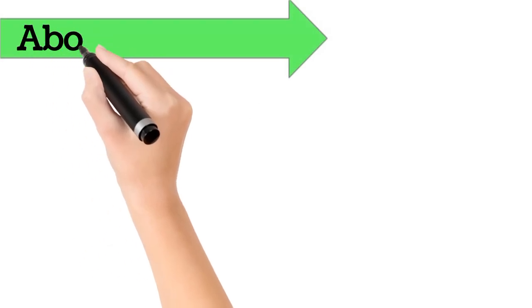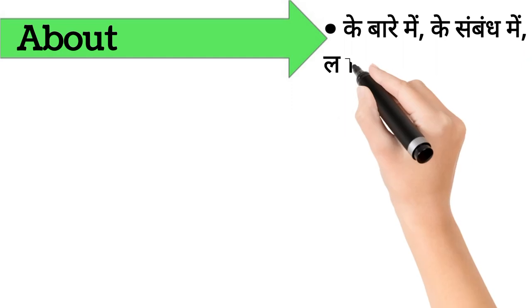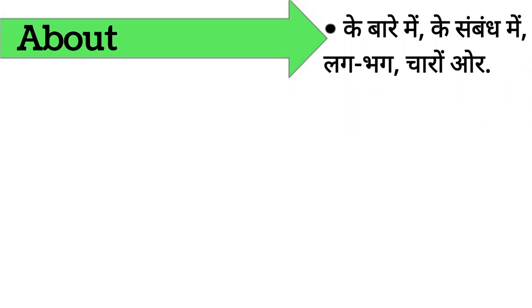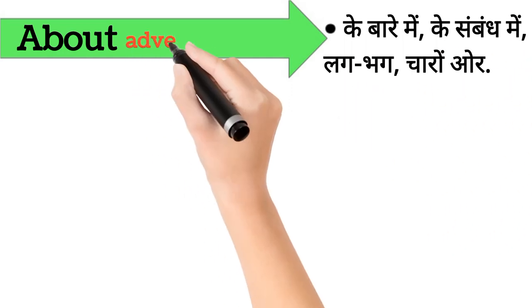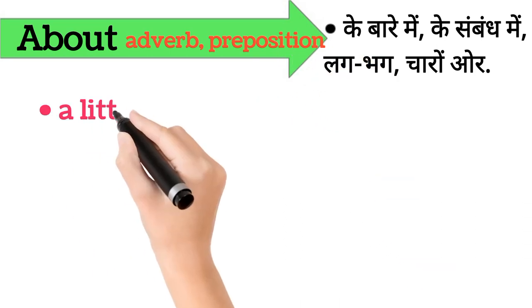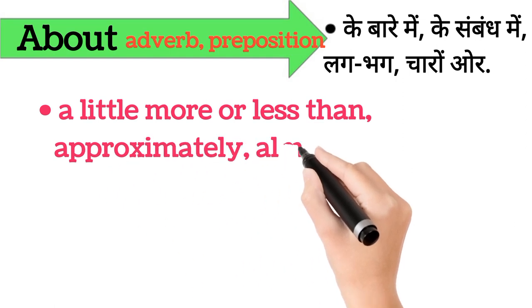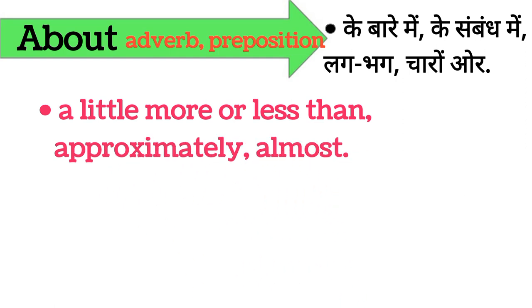About. About ka arth hai, ke baare mein, ke sambandh mein, lag-bhag, chaaron aur. About word adverb, preposition form mein aata hai. It's also called, a little more or less than, approximately, almost. Iska example hai, sorry about the mess.